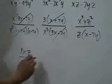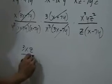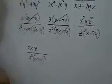And we have x minus 7y times x minus 7y, or x minus 7y quantity squared.